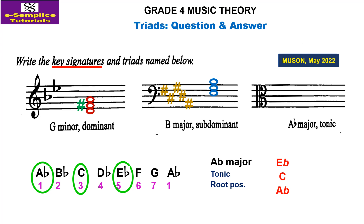For this question, the clef is alto clef, so line three is your middle C. First, let's write the key signature of A flat major, as the question requires: B flat, E flat, A flat, and D flat. Then put the triad on the stave — A flat first, followed by C, followed by E flat.